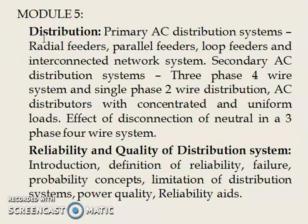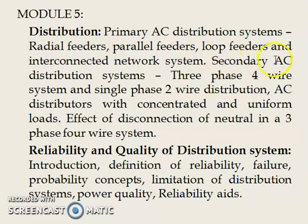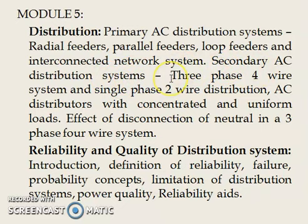In this chapter, one part deals with distribution, which consists of primary AC distribution system — where we have to study radial feeders, parallel feeders, loop feeders, and interconnected network systems. Secondary AC distribution system includes three-phase four-wire system and single-phase two-wire distribution.